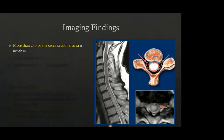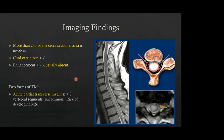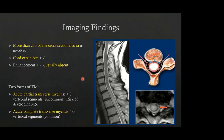Imaging findings in transverse myelitis: more than two-thirds of the cross-sectional area of the cord is involved, cord expansion may or may not be present, and enhancement is usually absent. Two types exist: acute partial transverse myelitis spans less than three vertebral segments — uncommon, but when it occurs, there is risk of developing MS in the future. Acute complete transverse myelitis is the more common form, presenting with long segment myelopathy spanning more than three vertebral body segments.